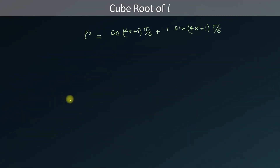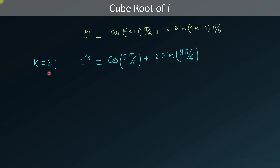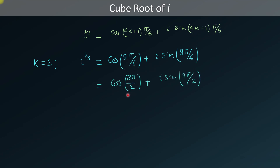Now we put k = 2 to get the last cube root of iota. We substitute k = 2 in the equation and get iota to the one-third is equal to cosine(9π/6) + i·sine(9π/6). Here 3 is a common factor, so we cancel it and get cosine(3π/2) + i·sine(3π/2).